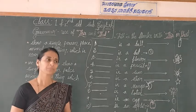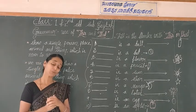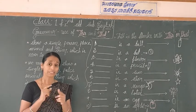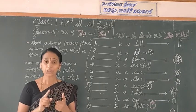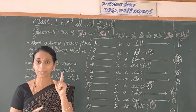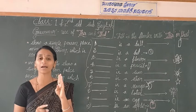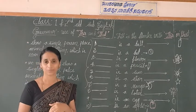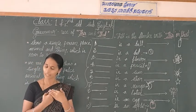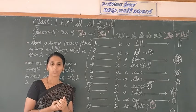When do you use 'this' and how do you use it? 'This' shows a single person, place, animal, or a thing. It is near to me.